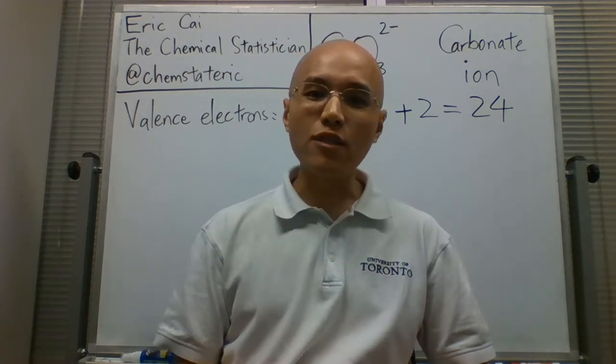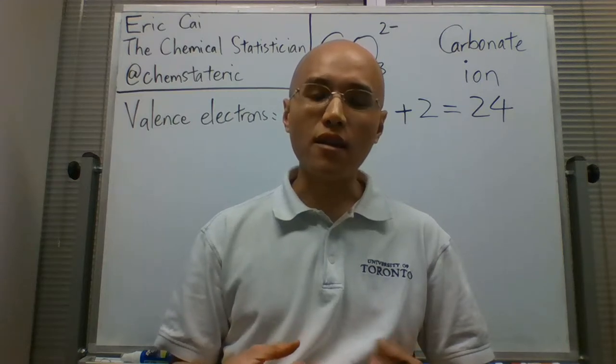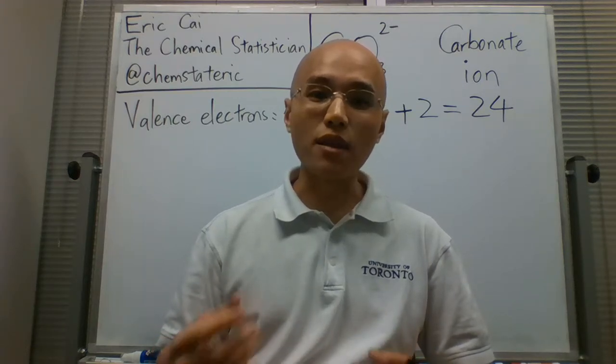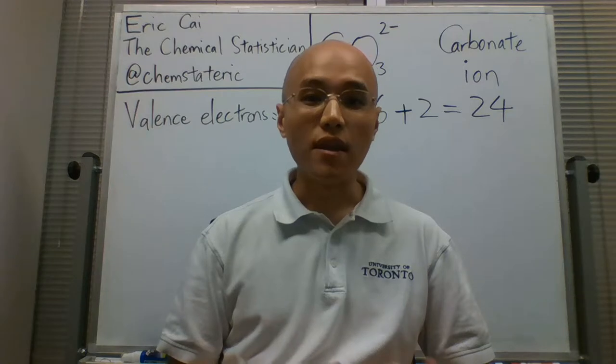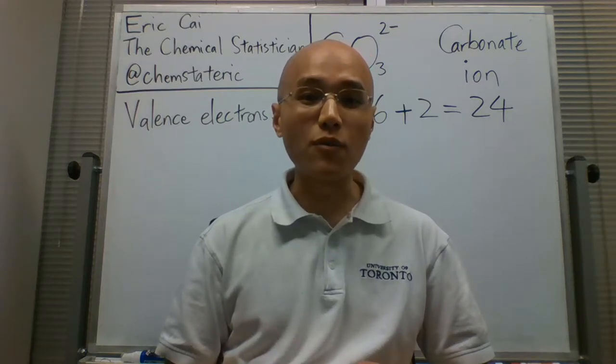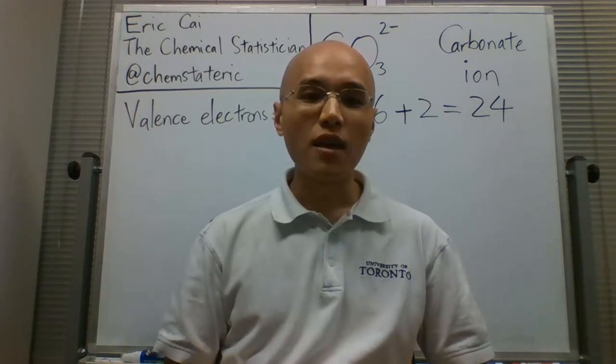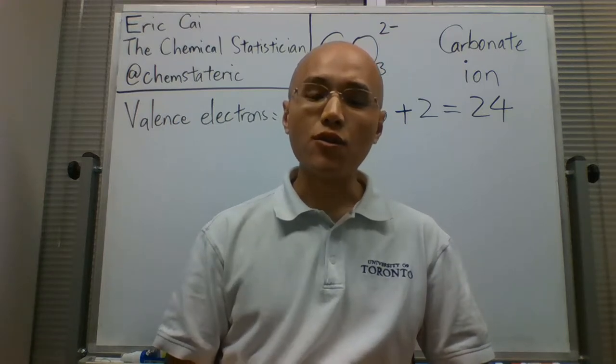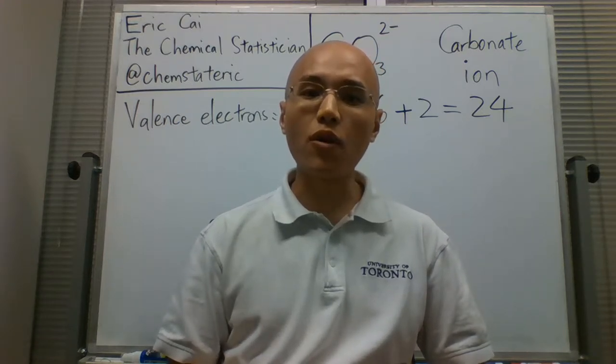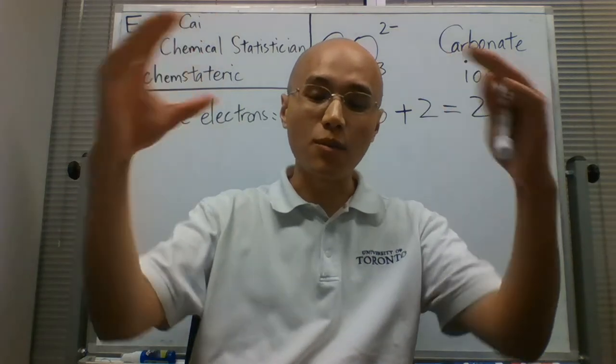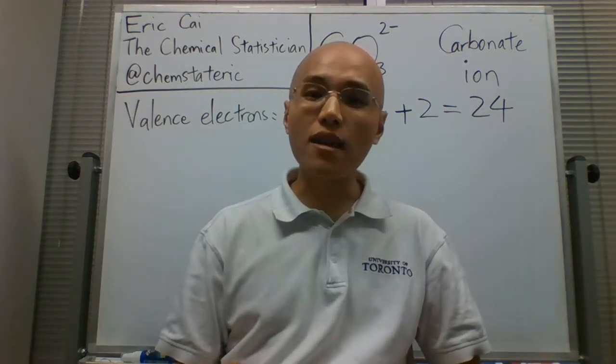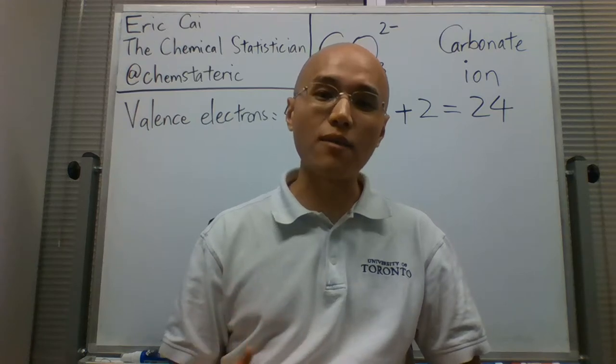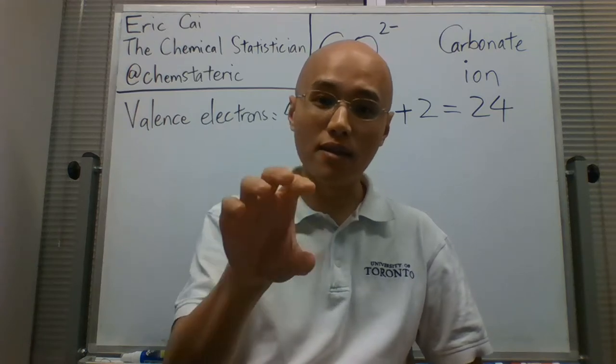Now, we need to determine the arrangement of the atoms in this polyatomic ion. As usual, I encourage you to think about electronegativity. Oxygen is more electronegative than carbon, so it makes sense to put the more electronegative atoms, the oxygens, on the periphery, and the less electronegative atom, the carbon, in the center.